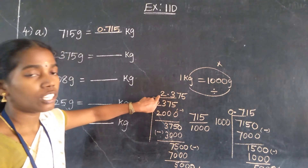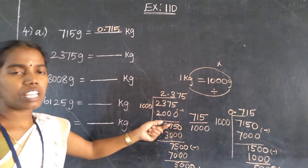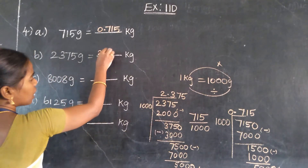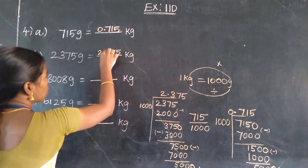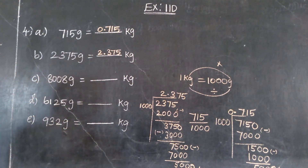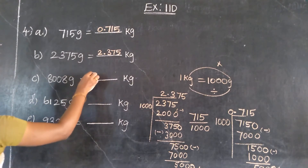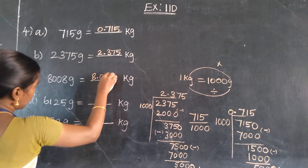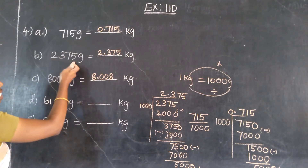It is a point — the value before the point is the kilogram value. After 3 decimal places, it is the gram value. Find out. Then 8008 grams. So 8.008 kilogram. So in 3 decimal places, it is a 4-decimal-digit number.